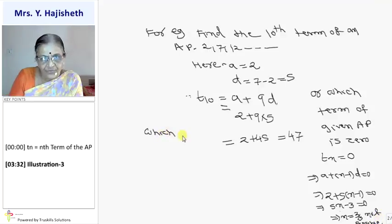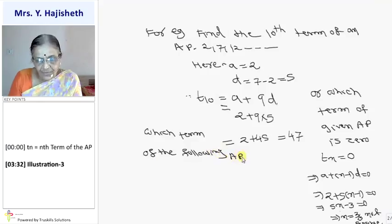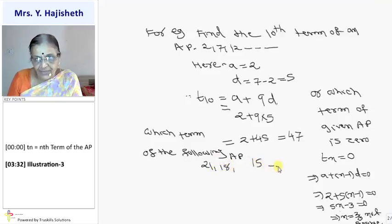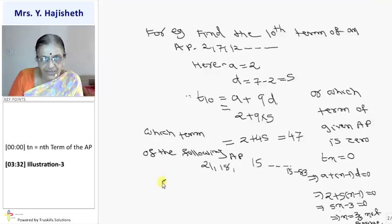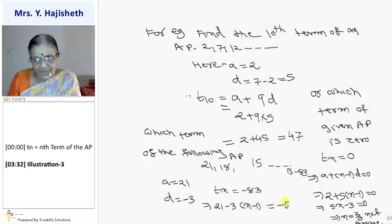Now suppose you are given which term of the following AP. AP badal dete hoon. AP is 21, 18, 15 and so on, which is minus 83. Toh aajayega. So here A is 21, D is 18 minus 21 minus 3. So Tn is minus 83. Now do it. Tn is A, so 21 minus 3 times N minus 1 is minus 83. You simplify karo isko, toh you will get N is 35.